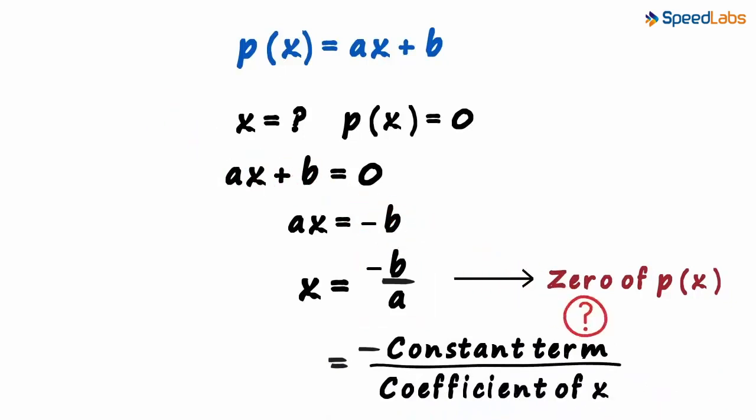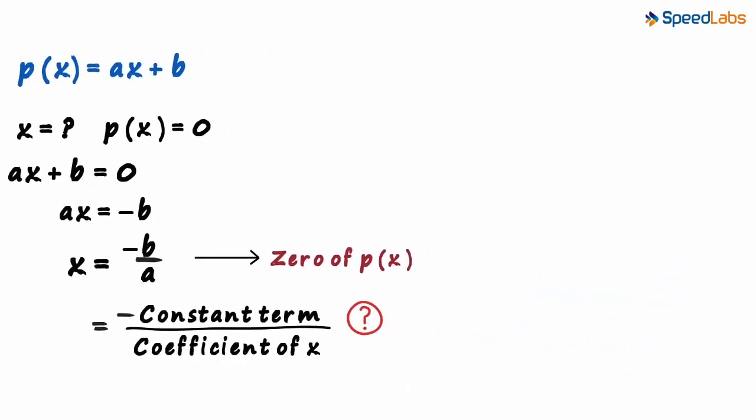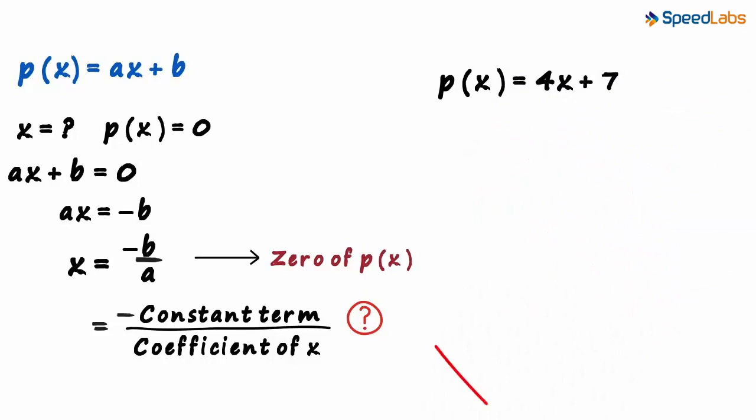Why did we find this out? How does this help us? Let us say P of X equals 4X plus 7. You can either follow this entire procedure of equating this to zero and then finding X, or you can use this formula.